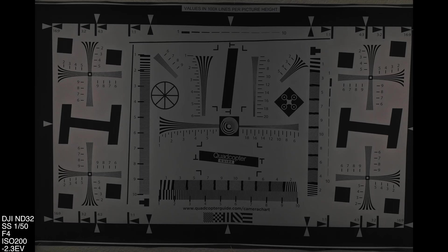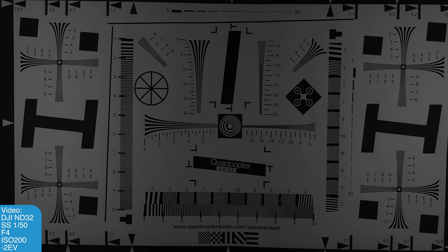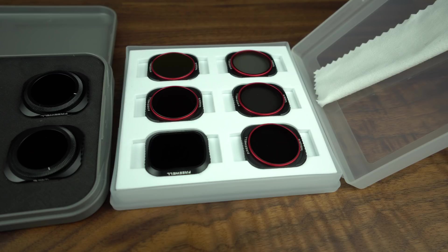Here the DJI ND32 filter — the red shift is more pronounced where the lights are reflecting. Note that I had to bump up the ISO to 200 because it was just getting too dark. Here's the same ND32 at zero exposure value, and the ND32 in video mode — also ISO 200.